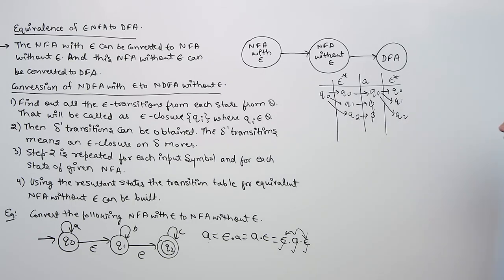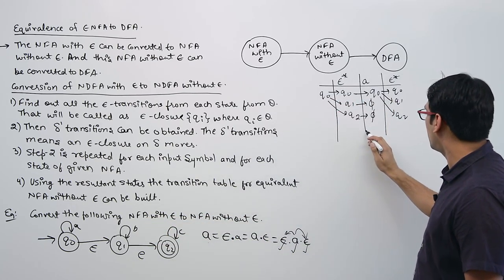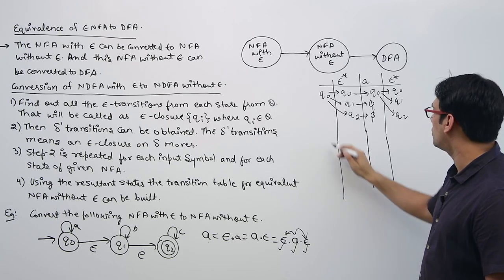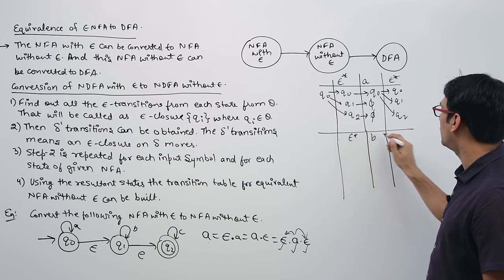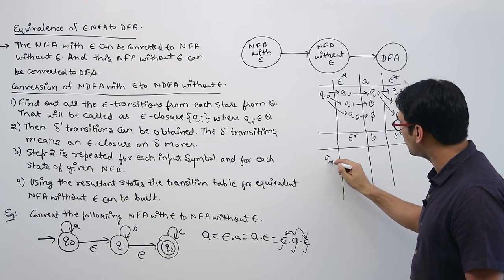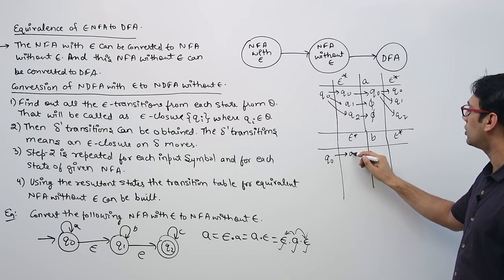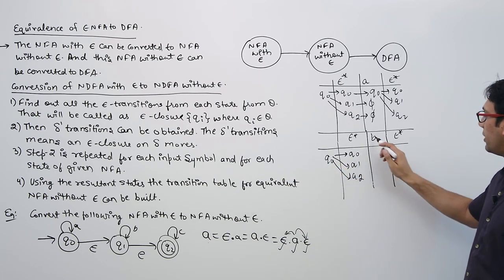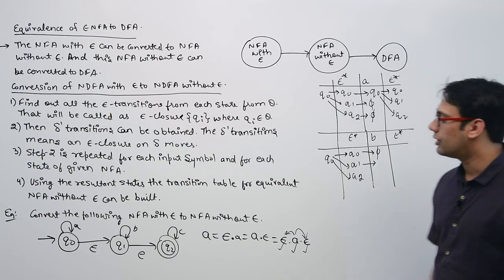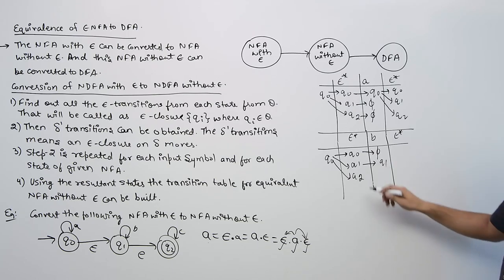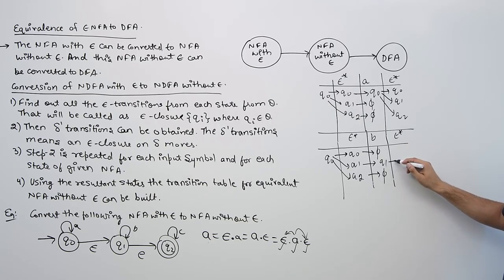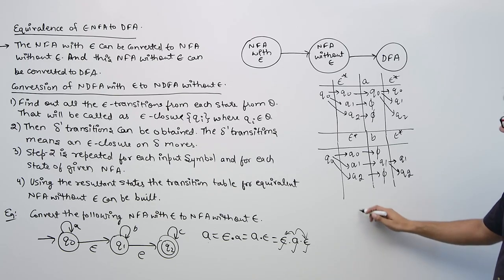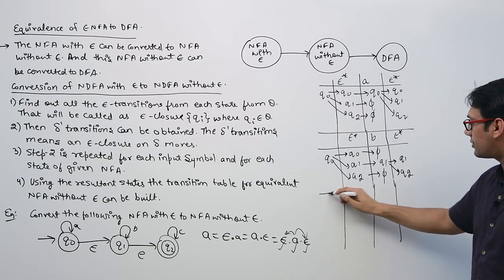Now do the same thing for symbol B. For symbol B, the Epsilon closure of Q0 is {Q0, Q1, Q2}. After applying the transitions on B, the result is {Q1, Q2}.